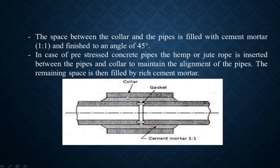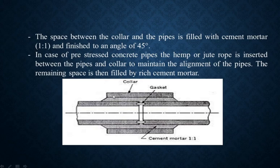This is the pipe and this is the concrete collar. Basically, the angle is 45 degrees. You connect two concrete pipes and slip the concrete collar and attach it. The space left between the pipe and the collar is filled with cement mortar. The angle is closed and finished at 45 degrees.